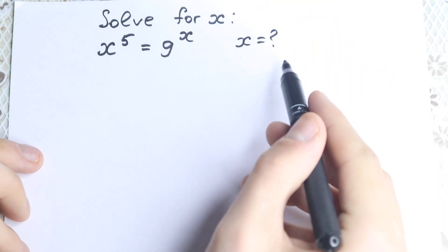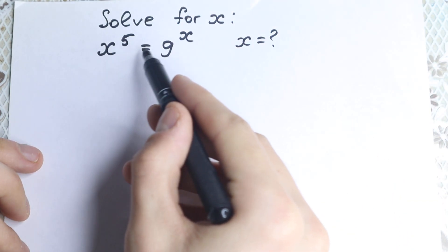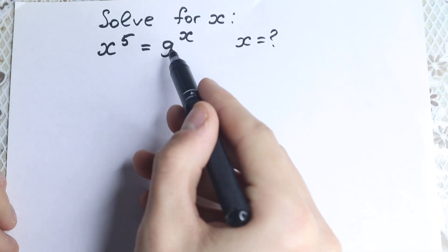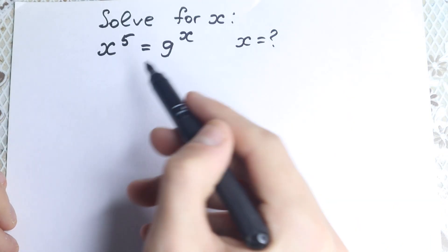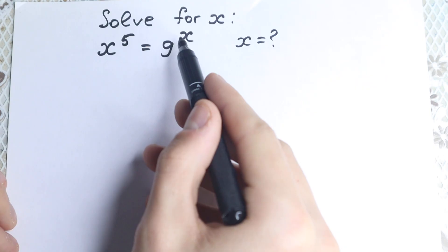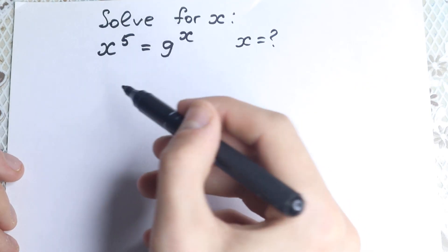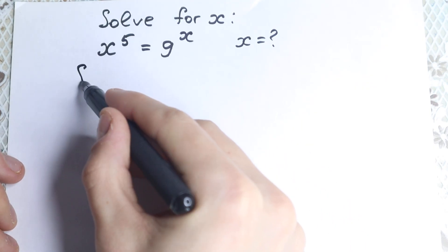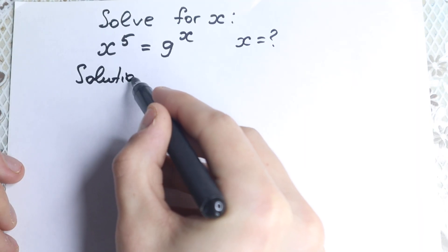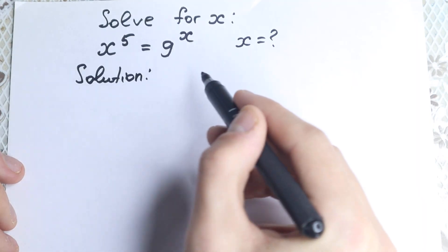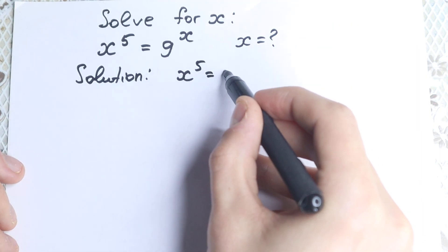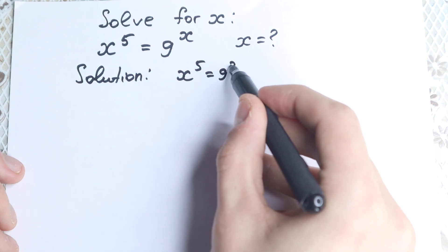This is an exponential equation. We have an exponential function on the left-hand side and on the right-hand side. We have different bases, we have different powers, so how can we solve it? Of course, if we have exponents, it's really great to start with log. So we have the solution right here. We have x to the fifth power equal to 9 to the x.